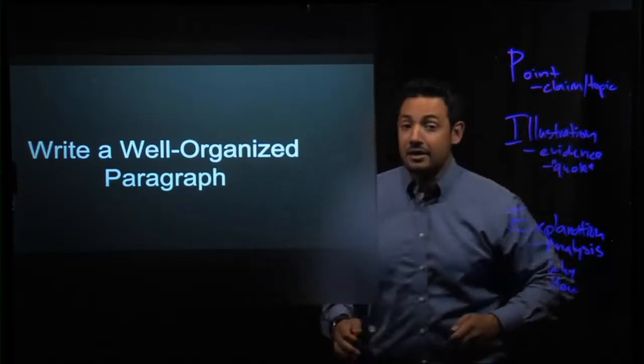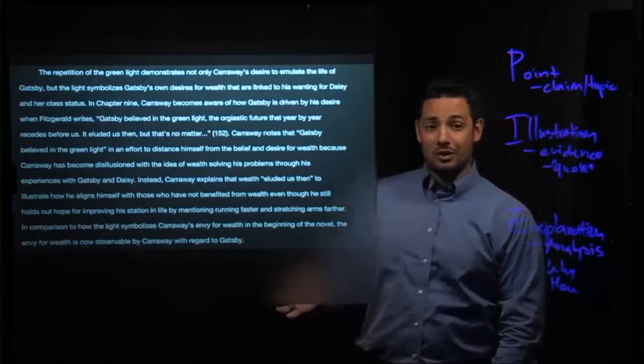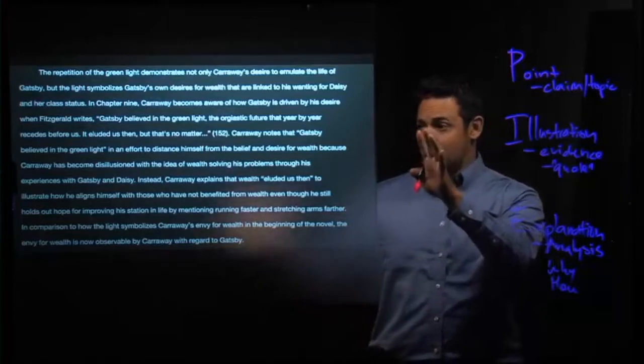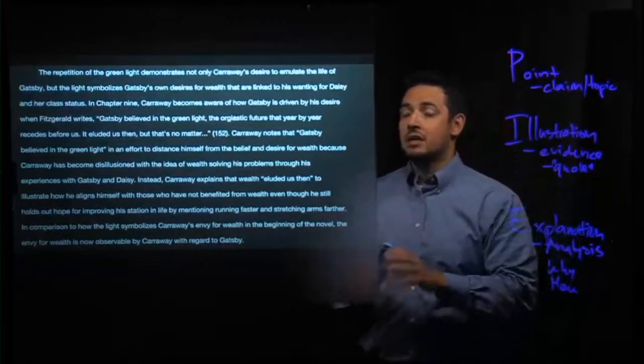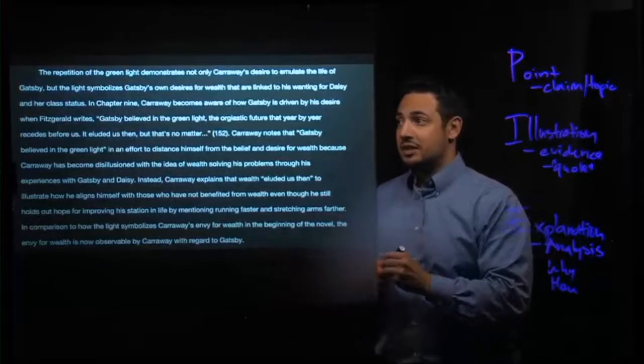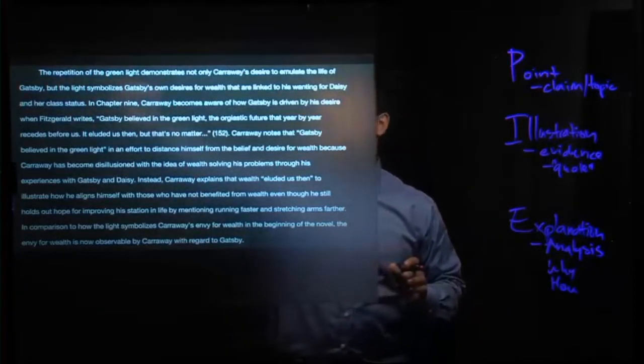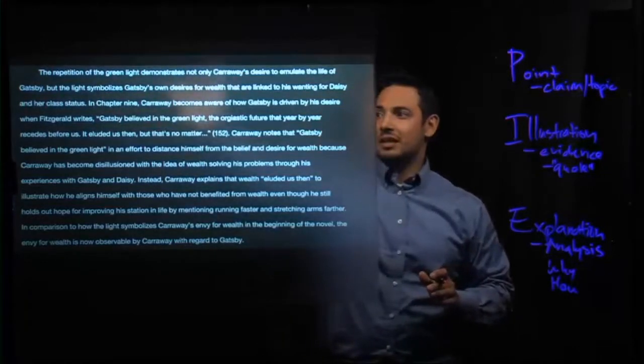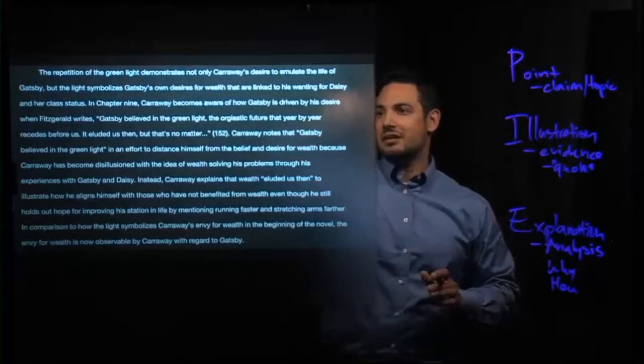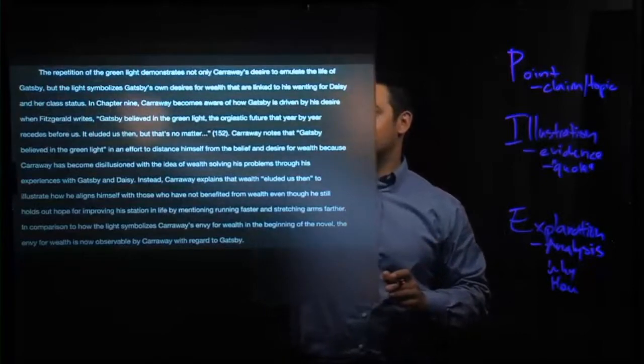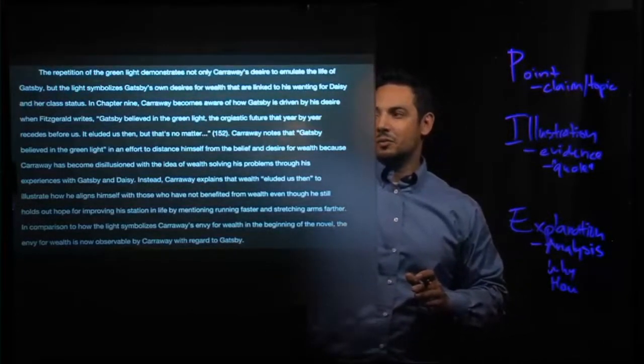Taking a look at an example of a well-organized paragraph, even though it's a bit large for this particular glass, we can still see some of the characteristics that are demonstrated here. We can clearly see that it begins with this argument that says, the repetition of the green light demonstrates not only Carraway's desire to emulate the life of Gatsby, but the light symbolizes Gatsby's own desire for wealth.